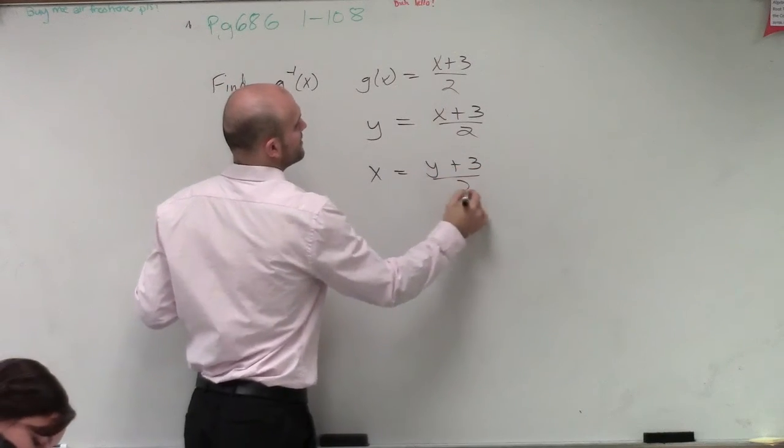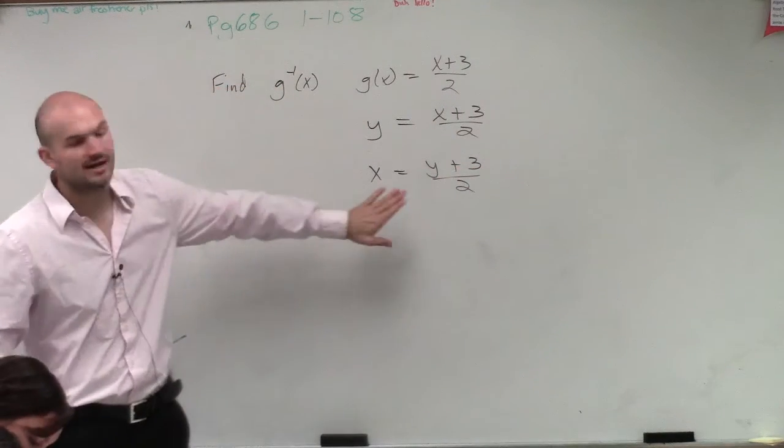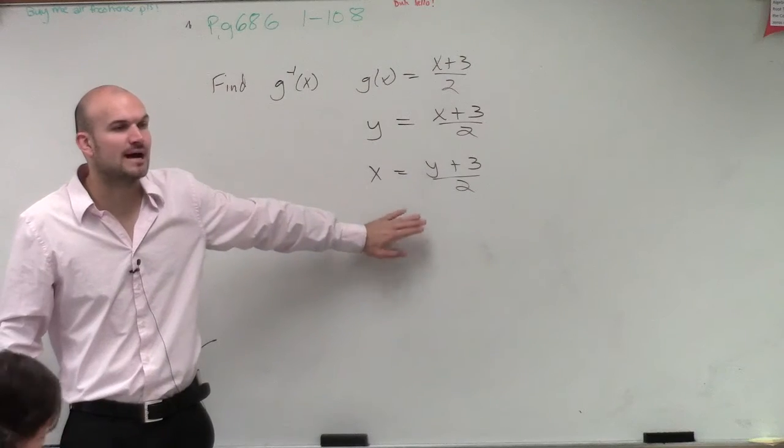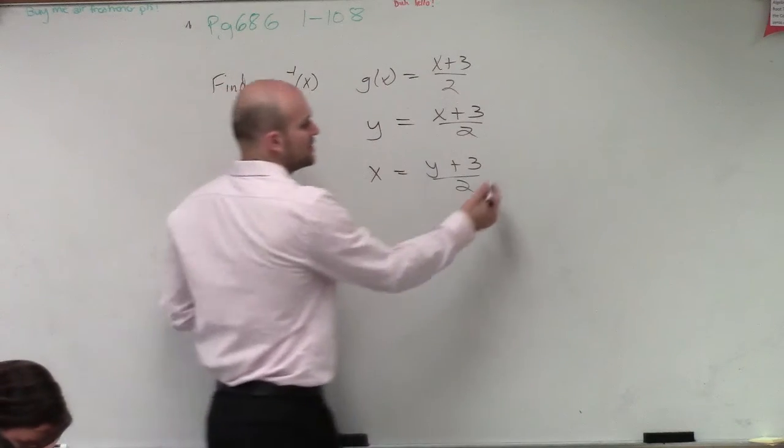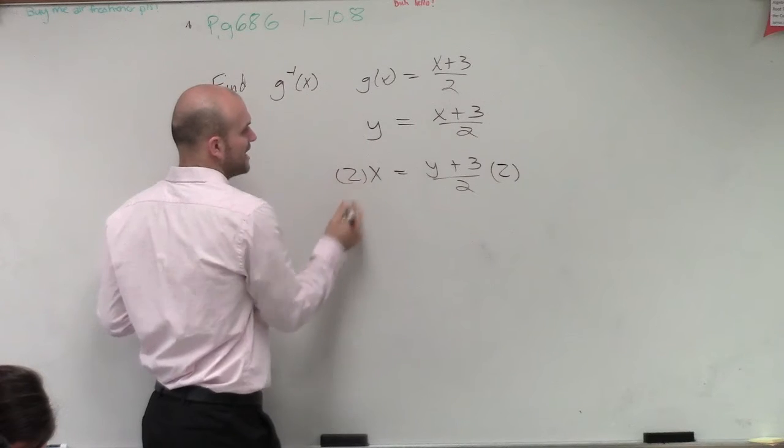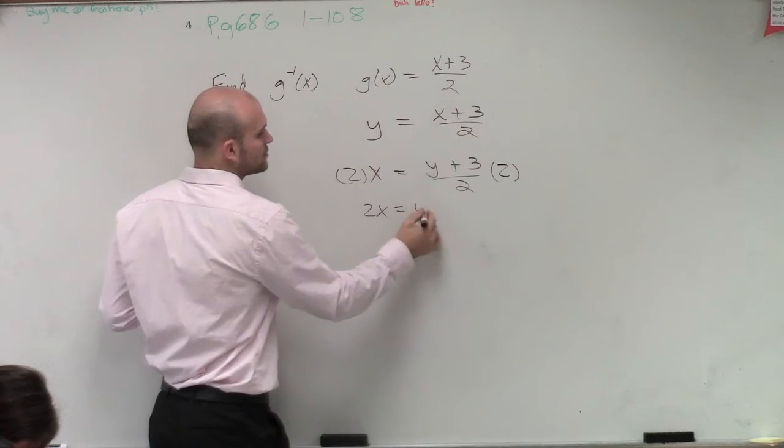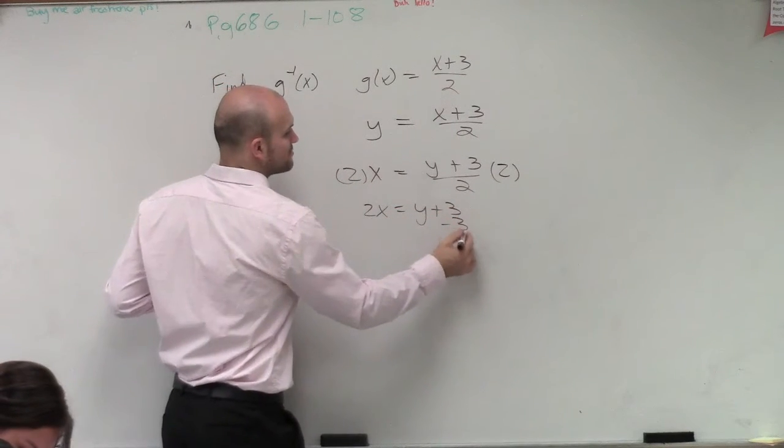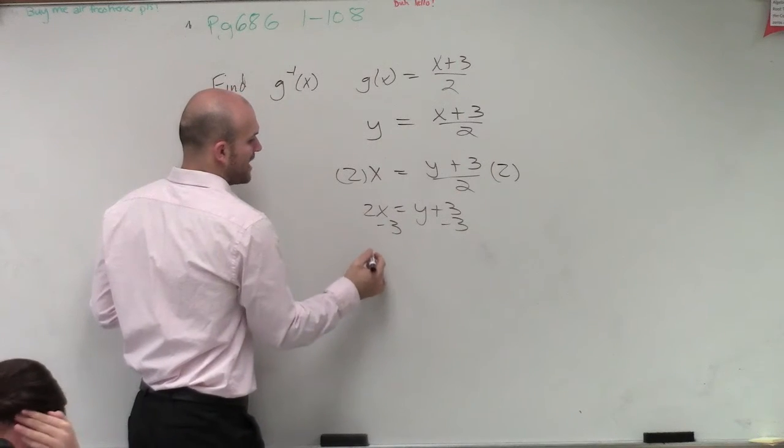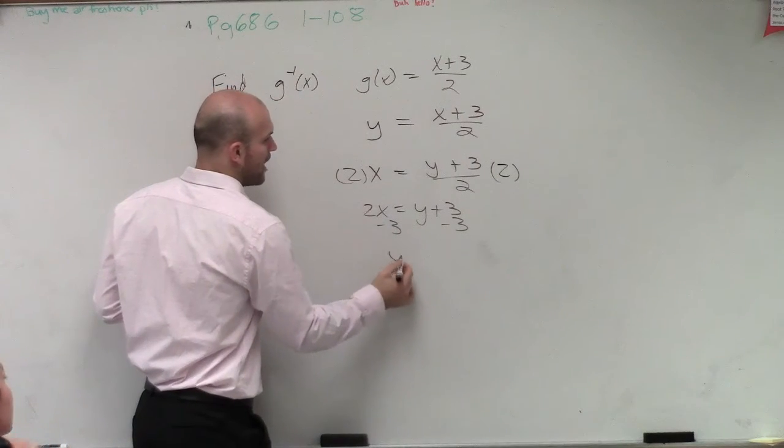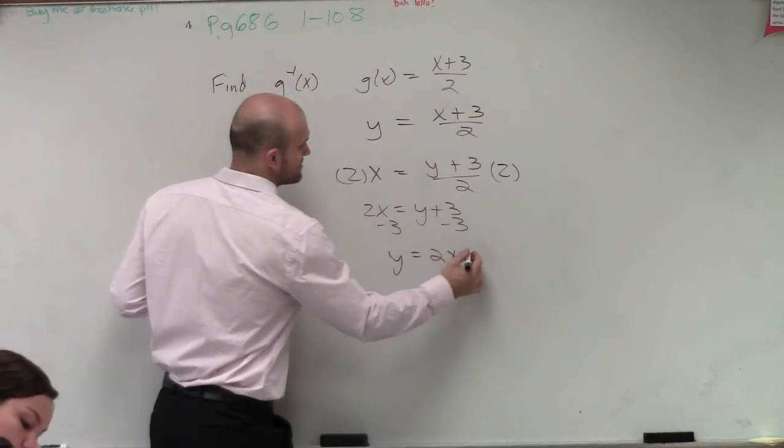And then we solve for y. So now to solve for y, I need to undo the operations. So the first thing I need to do is undo division. So I multiply by 2 on both sides. Then I have 2x equals y plus 3. Then I subtract 3. So I have y now equals 2x minus 3.